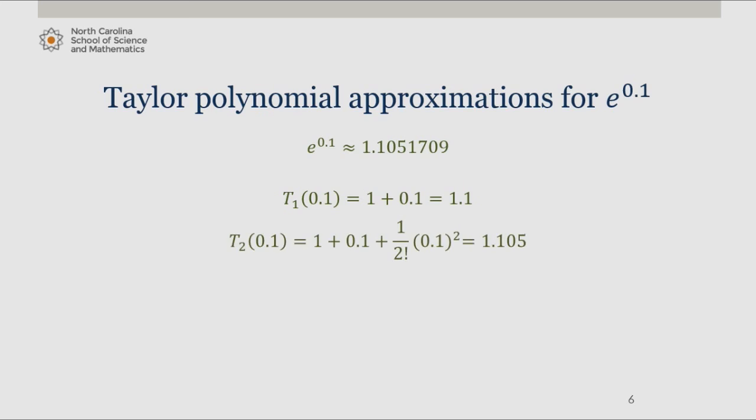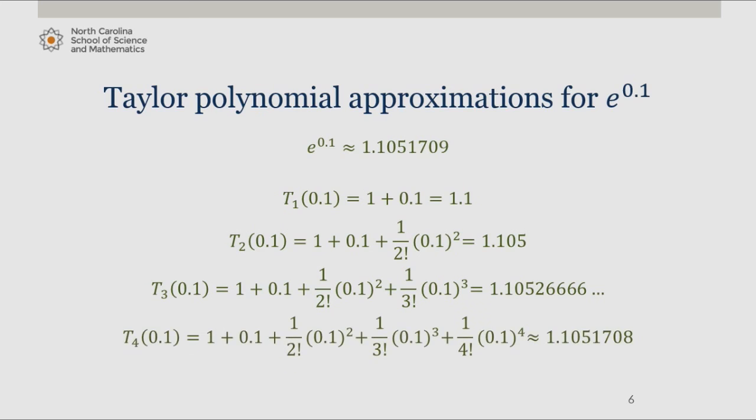The second degree polynomial gives us 1.105. The third degree polynomial gives us 1.10526 and so on. The fourth degree polynomial gives us 1.1051708.